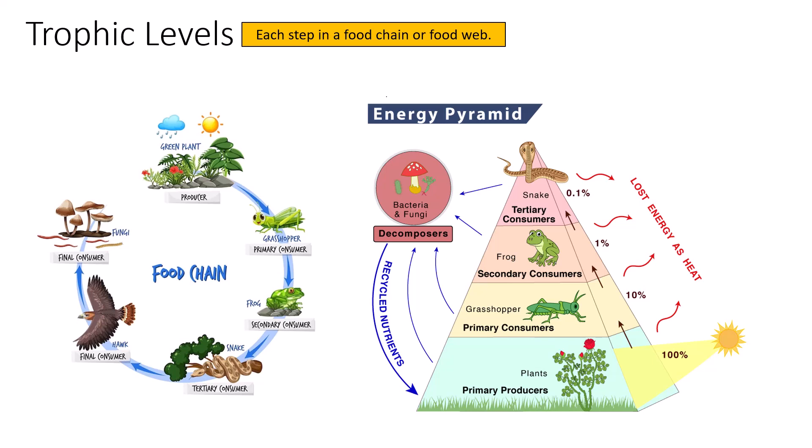That frog is going to lose roughly 55% of the energy it consumes as heat. It uses ~35% to keep itself alive through normal cellular energetics — muscle contraction, neuron transmission — all of which require energy. That leaves again roughly 10% of the energy the frog consumes available to the next level, the snake, at the tertiary consumer level. This gives us the 10% rule: 100 → 10 → 1 → 0.1.